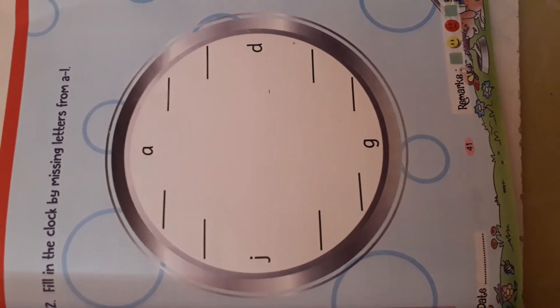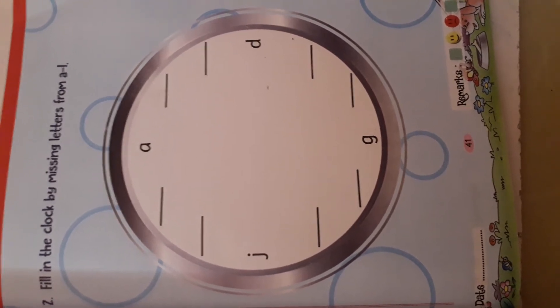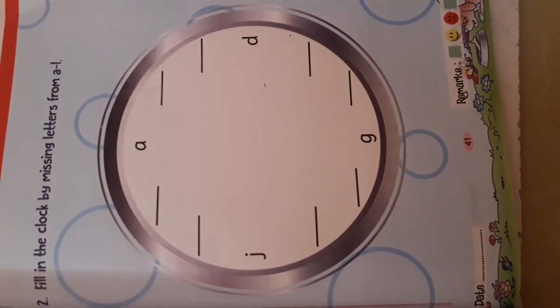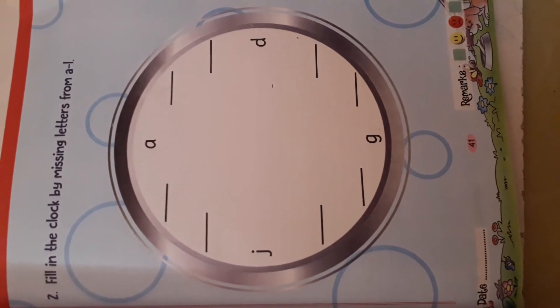As you do the missing number, in the same way, we will do the missing letter. What you have to do? You have to just read the letter and the letter which is missing, you have to write in the space.